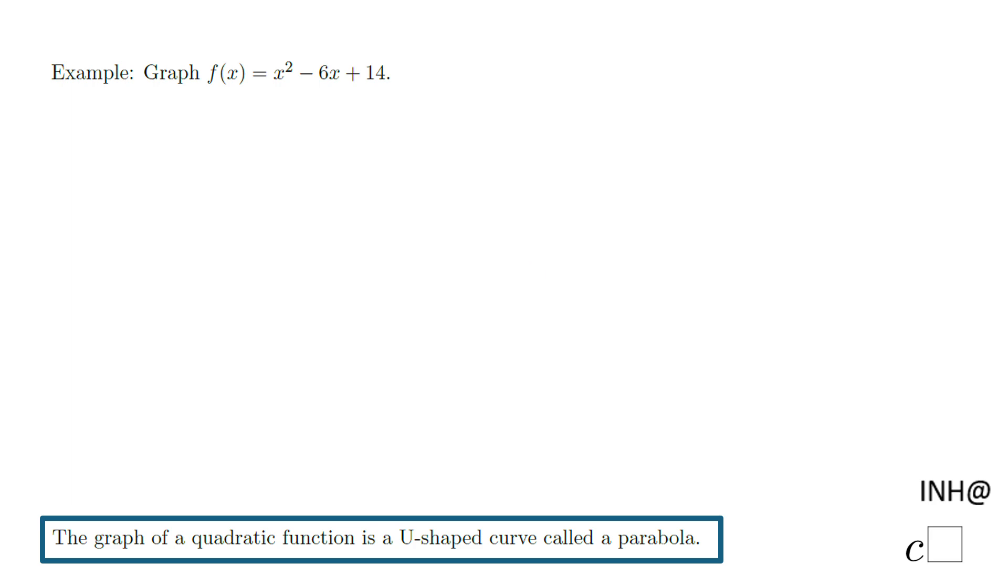Welcome or welcome back at I need help at C squared. In this example we will graph this function f(x) equals x squared minus 6x plus 14, and this is what we call a quadratic function because you have this power of 2. The graph of a quadratic function is a U-shaped curve called a parabola.